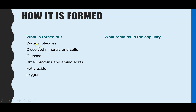To summarise what is forced out: water, dissolved minerals and salts, glucose, small proteins and individual amino acids, fatty acids, and oxygen. The molecules which are too large to be forced out through those tiny gaps are red blood cells, platelets, and large proteins. Tissue fluid is not red in colour because there are no red blood cells in it.